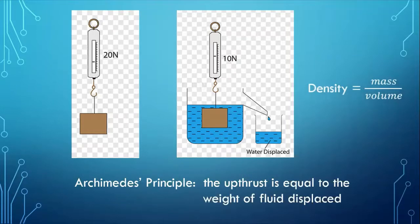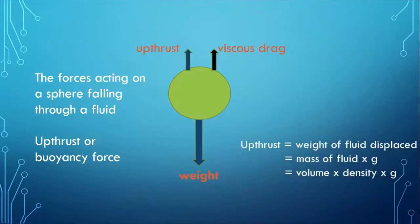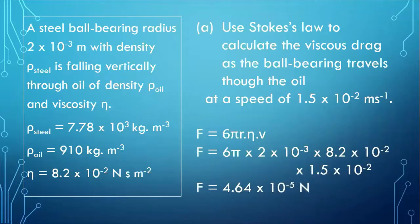And we also need to remember that density is mass over volume, but I'm sure you know that already. So here's our sphere. It's falling through a fluid. It's experiencing viscous drag, an upthrust force, and the weight is downwards. Now, the upthrust is the weight of the fluid displaced. It is the mass of the fluid times g. Well, mass is volume times density. And that's an important consideration in calculations. And here's a calculation that I want us to look at.